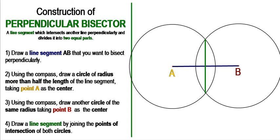To recall the steps: first, draw the line you want to bisect. Second, draw one circle with point A as the center and another circle with point B as the center, both with the same radius more than half the line length. Then draw a line segment joining the two intersection points of the circles. I hope you have understood this. In the next video we will discuss how to draw a perpendicular bisector of a chord of a circle.